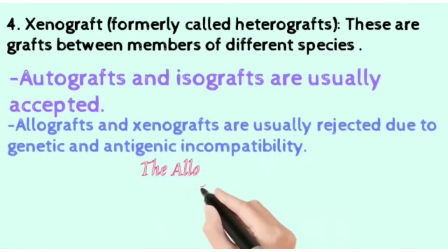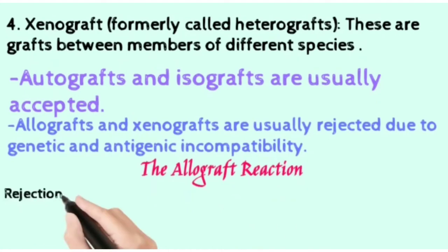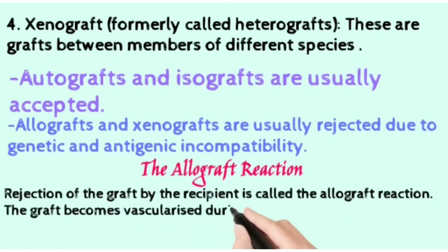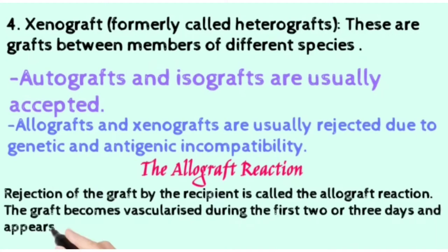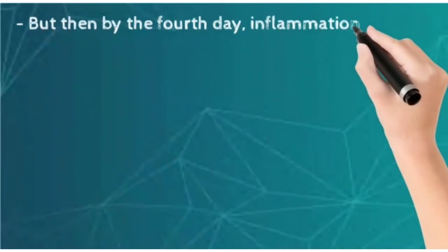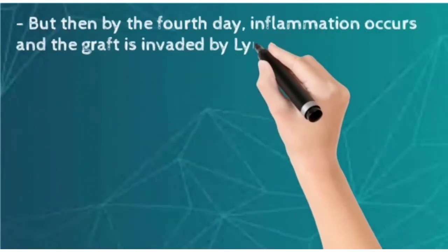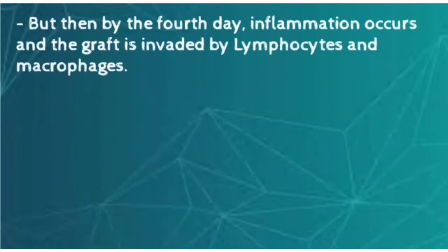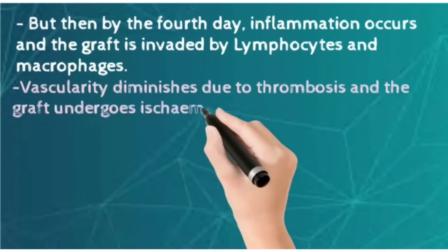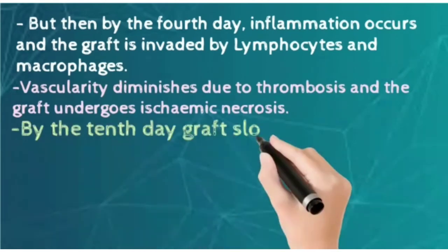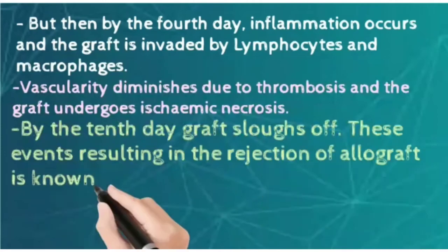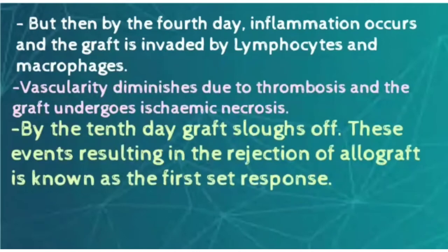The allograft reaction: rejection of the graft by the recipient is called the allograft reaction. The graft becomes vascularized during the first two or three days and appears to be accepted initially. But then by the fourth day, inflammation occurs and the graft is invaded by lymphocytes and macrophages. Vascularity diminishes due to thrombosis and the graft undergoes ischemic necrosis. By the tenth day, the graft sloughs off. This is known as the first set response, and cell-mediated reaction is responsible.